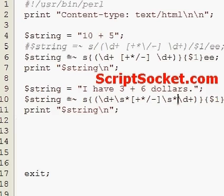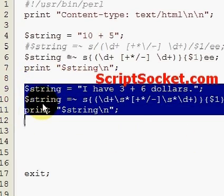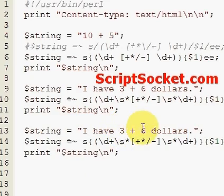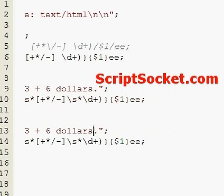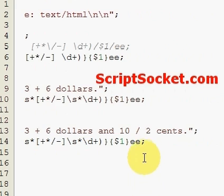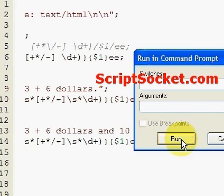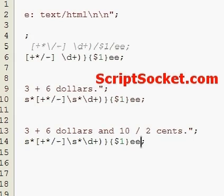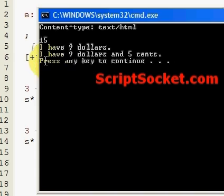Finally in this tutorial, let's extend our string to say 'I have three plus six dollars and ten divided by two cents'. First let's run it as is — we get 'I have nine dollars and ten divided by two cents'. If we make this global and run it, we get 'I have nine dollars and five cents'.